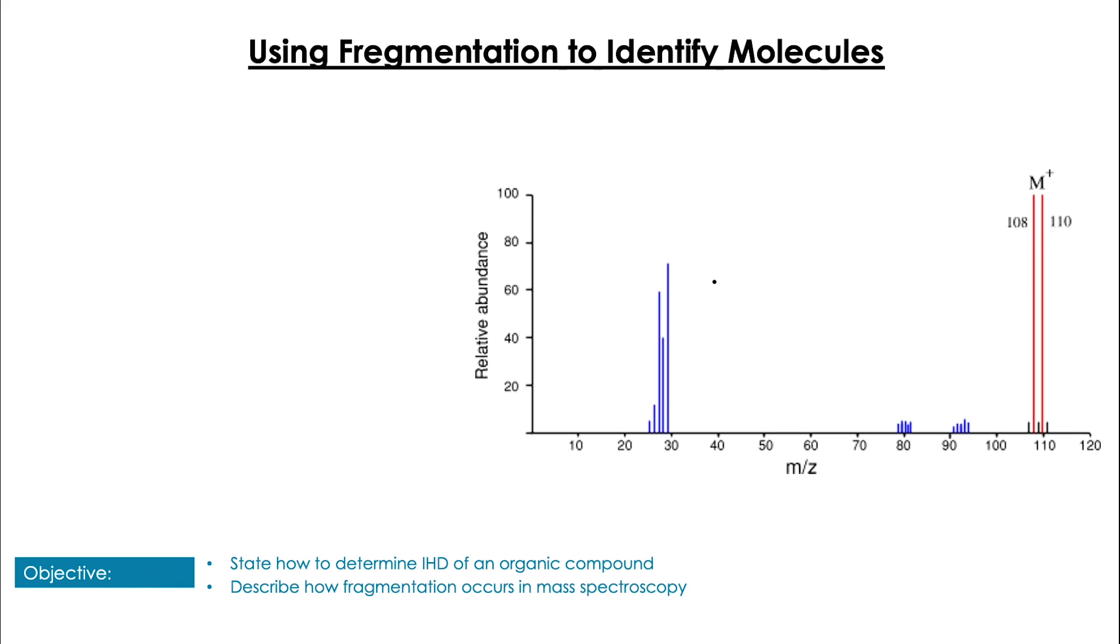These two smaller peaks refer to the fragmented individual chlorine atoms that have been ionized and are showing a peak around the mid-30s. So this process of fragmentation can be used to help us identify molecules.